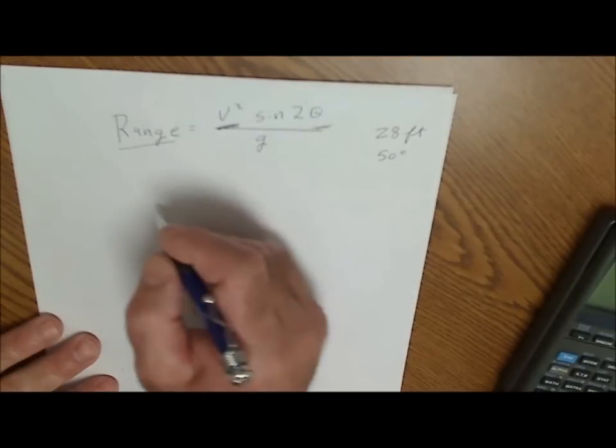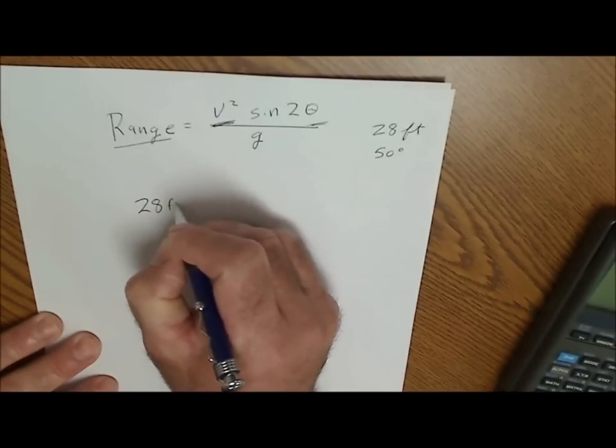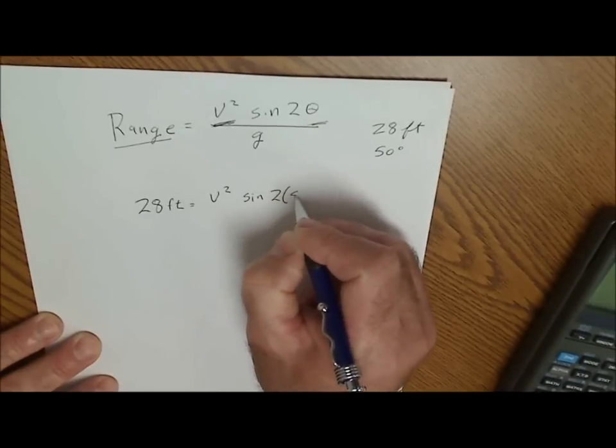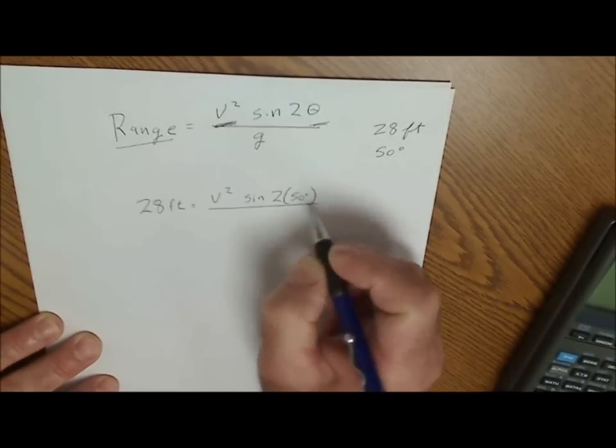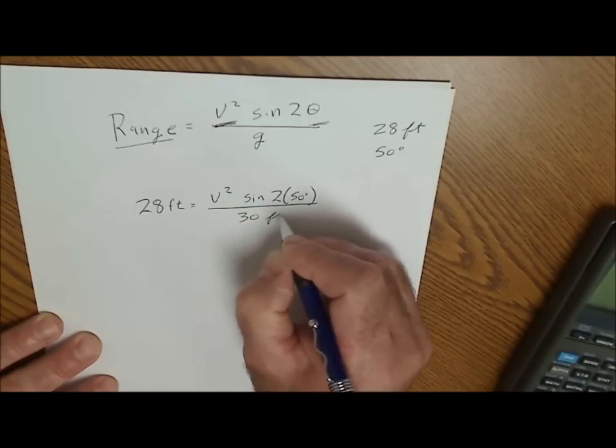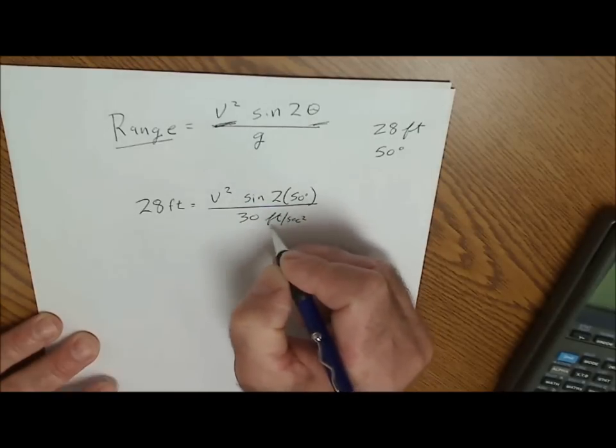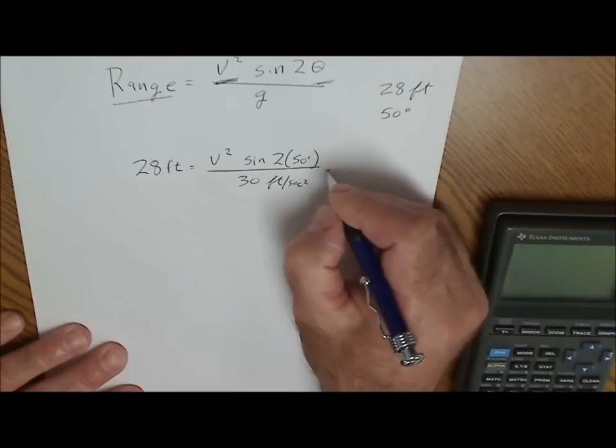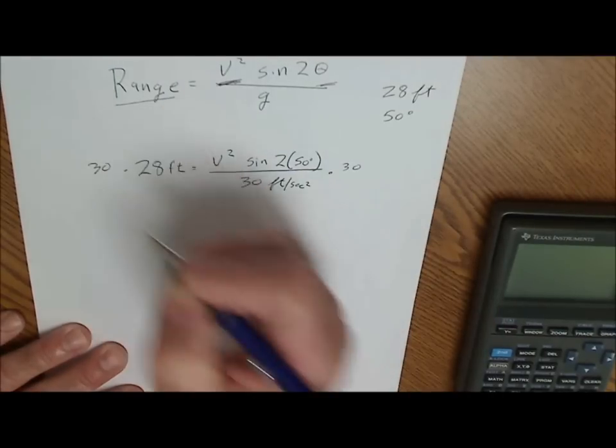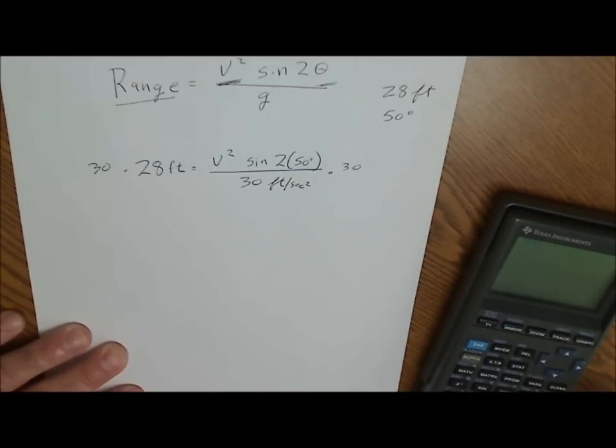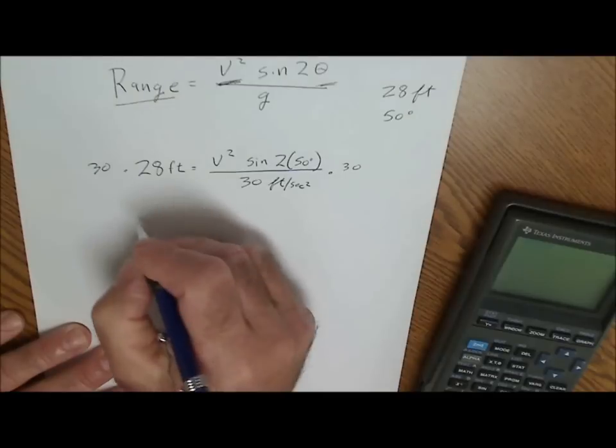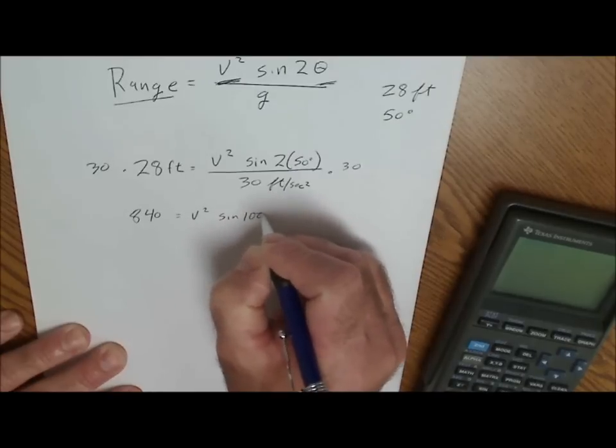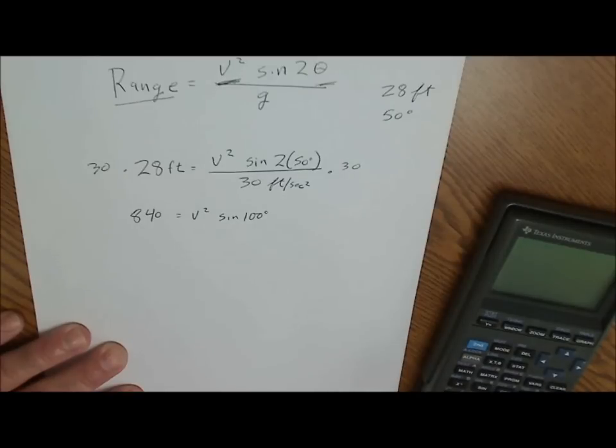So I'm going to just plug in my knowns. 28 feet is equal to velocity squared sine of 2 theta. Theta is 50 degrees. All divided by, we'll use 30 feet per second squared. So the first thing I'll do is multiply both sides by 30. So 30 times 28 is 840. 840 equals velocity squared sine of 100 degrees, 2 times 50.